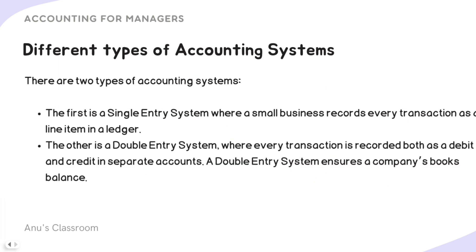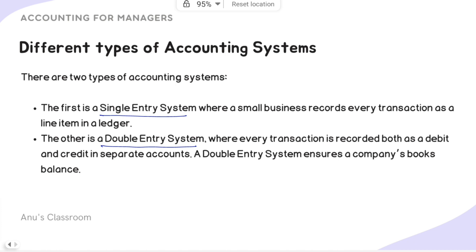The accounting equation is the foundation of the double entry accounting system, so we can understand that double entry is one type of accounting system. We also have a single entry system, which is mainly useful for small businesses that want to record every transaction as a single line item in the ledger. The double entry system is what you would most often find when you search for accounting journals, ledgers, and how to write them — it is the most widely used system today.